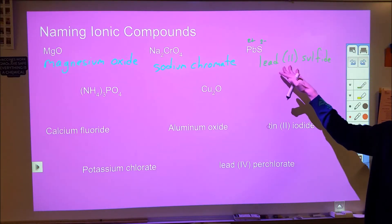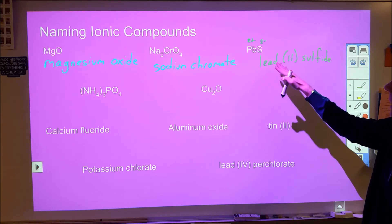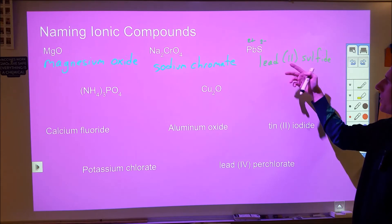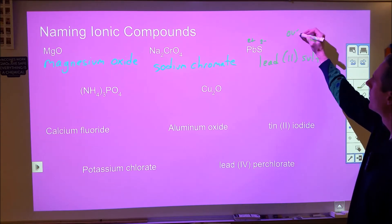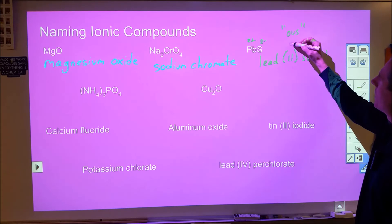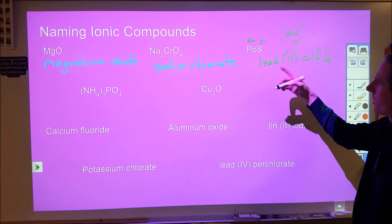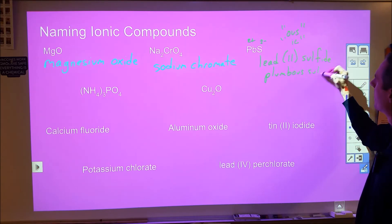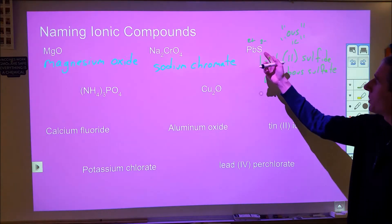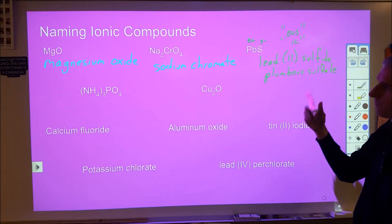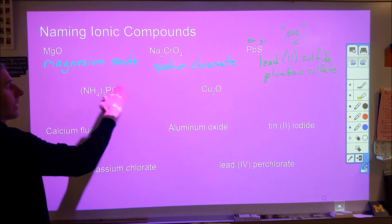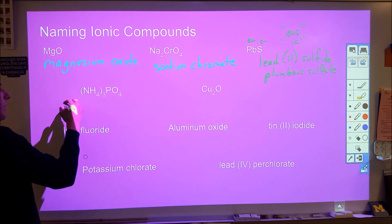Oh and just so you know too there is an alternate naming system that we used to use where they use the Latin forms of these so this would be plumbus and when you have multiple charges and there's two use the us suffix for the smaller charge and use ic for the larger charge so this would be plumbus sulfide and if it had been PbS2 would have been plumbic sulfide. Over here we've got a whole bunch of stuff so this looks like polyatomic ion and a polyatomic ion so if you haven't memorized them you have to look them up on an ion sheet.